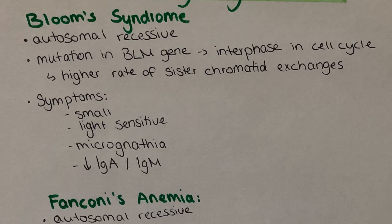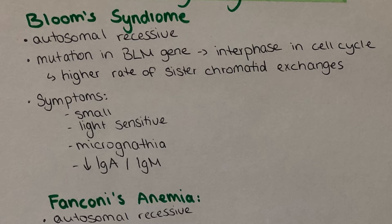Now I want to talk about Bloom syndrome, also called congenital telangiectatic syndrome. It is a very rare inherited autosomal recessive disease. It is difficult to assess how many people are actually affected because many doctors don't recognize the symptoms or know how to diagnose it. Literature states it is slightly more common in Ashkenazi Jews, where it is approximately 1 in 48,000 births. Children characteristically present with micrognathia — a small jaw — small stature, telangiectasis of the skin, hyper- or hypopigmentation, immune defects, and an increased rate of leukemia and melanoma. The increased risk for melanoma is due to the pigmentation changes and precancerous lesions which can develop due to sun exposure.